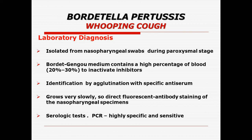This swab must be collected during the paroxysmal stage. A specialized medium is used — the Bordet-Gengou medium — which contains a high percentage of blood, 20 to 30% compared to the normal 5 to 7%. We can also identify the microorganism based on agglutination with specific antisera, and we can go for direct fluorescent antibody staining of nasopharyngeal specimens. PCR is highly specific and recommended as the method of choice for laboratory diagnosis.